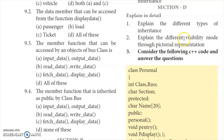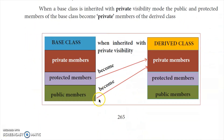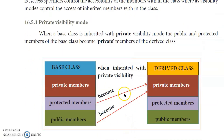Second question: explain the different visibility modes through pictorial representation. The answer is on page number 265. There are three types of visibility mode: private visibility mode, public visibility mode, and protected visibility mode. We will explain each with a picture.